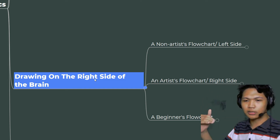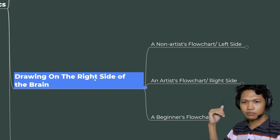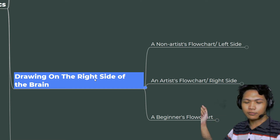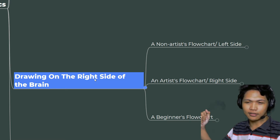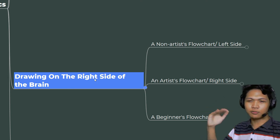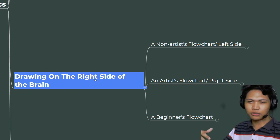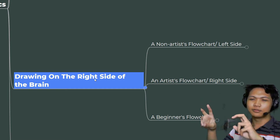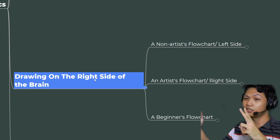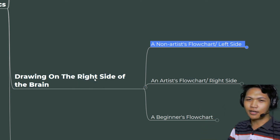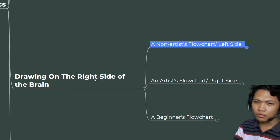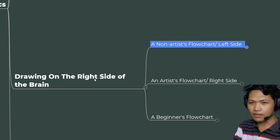They actually have a video series about this — quite old, but still really fun to watch. You'll see non-artists try to draw and have a big improvement in the span of about an hour, just because of thinking like an artist — or allegedly thinking on the right side of the brain instead of the left. Anyway, this is what the non-artist flowchart looks like, or as the book would call it, left-side thinking.